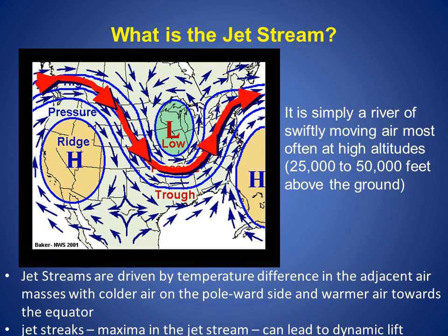Here is a depiction of the upper air winds around 35,000 feet above the ground. Here we can see ridges of high pressure across the western states and over the Atlantic Ocean. We can also see a trough of low pressure over the Great Lakes region.